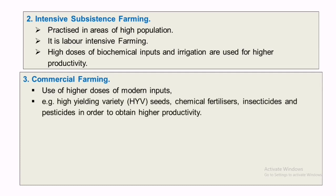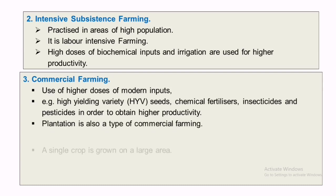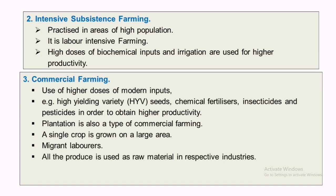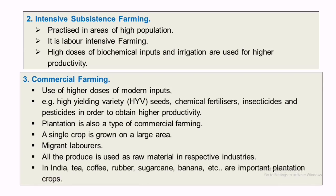Commercial farming uses modern inputs such as HYV seeds, chemical fertilizers, insecticides, and pesticides. Plantation is also a type of commercial farming, where a single crop is grown on a large area with migrant labor. All the produce is used as raw material in respective industries. In India, tea, coffee, rubber, etc. are examples of plantation crops.